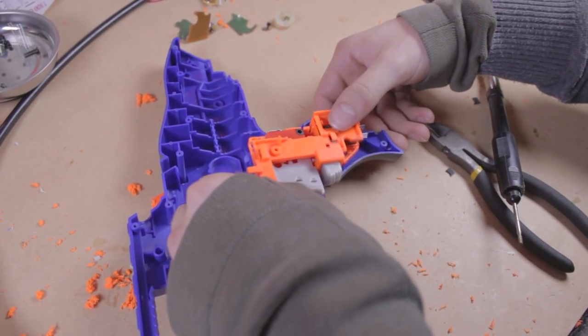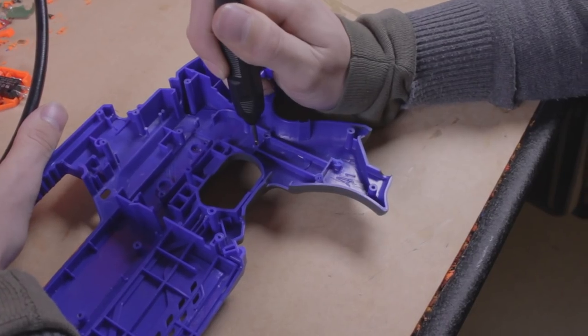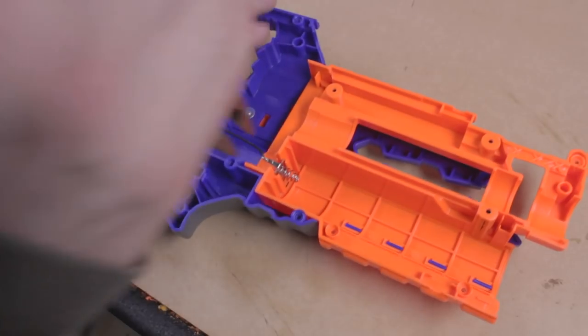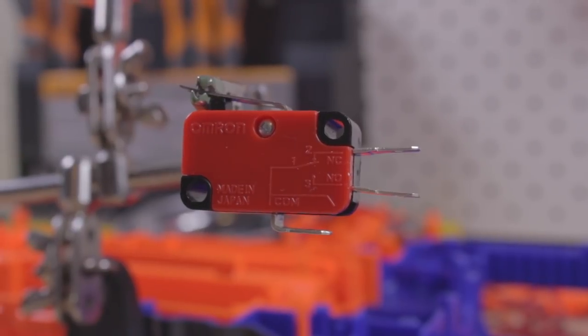Before we can continue, we need to dremel out a few of the support posts that stop our trigger group fitting back in and cut a channel here for wire access. There's also another battery tab to remove in the other half of the shell. Let's get rewiring.